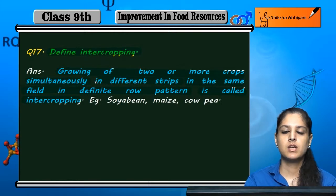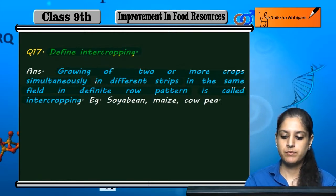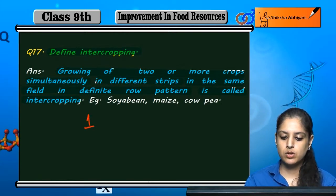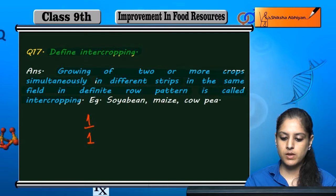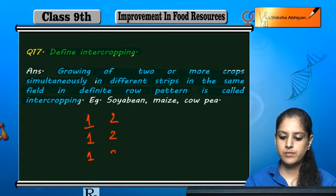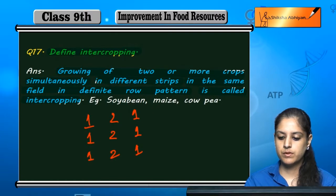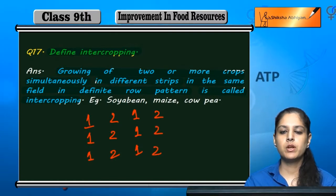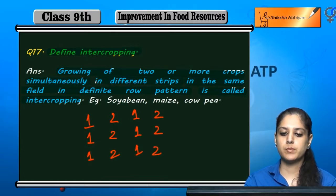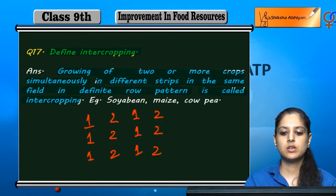For example, if we have crop one and crop two grown alternately — one, two, one, two — in a proper row pattern, this is intercropping.